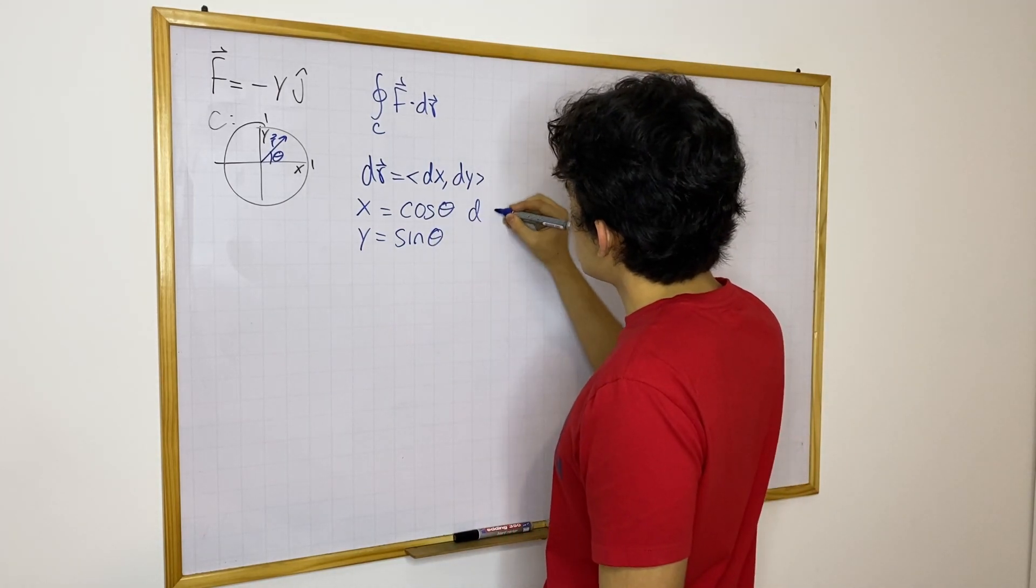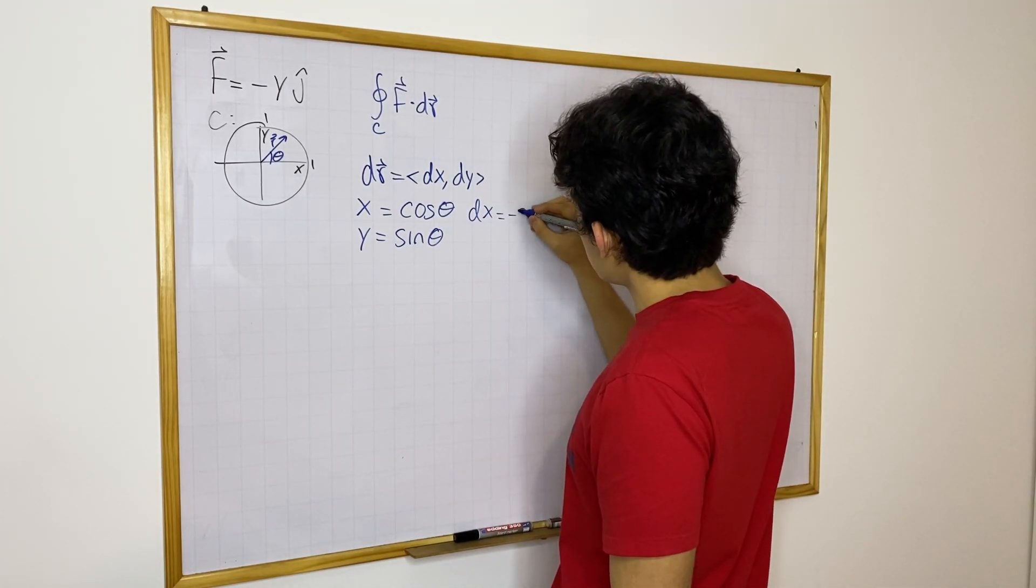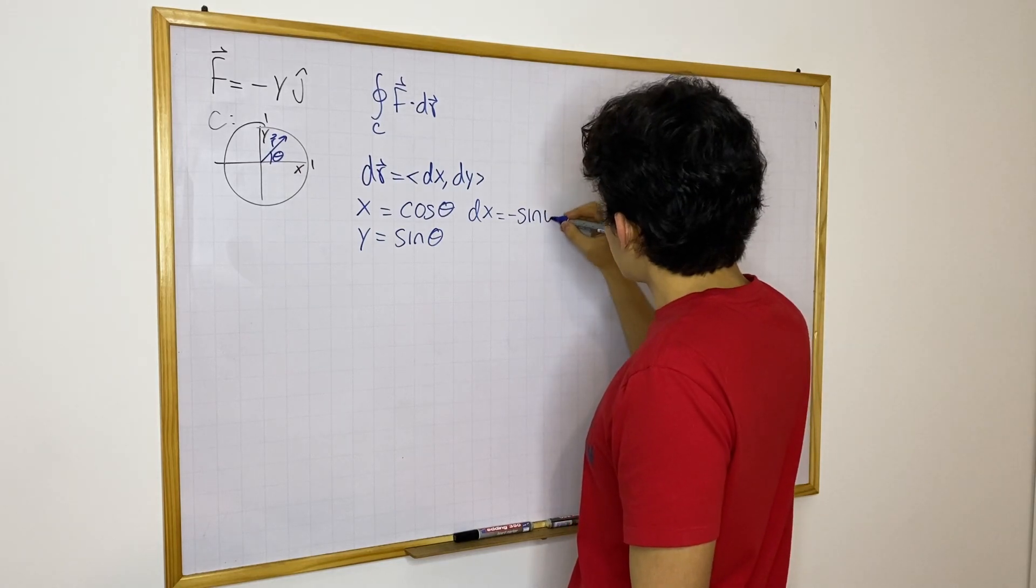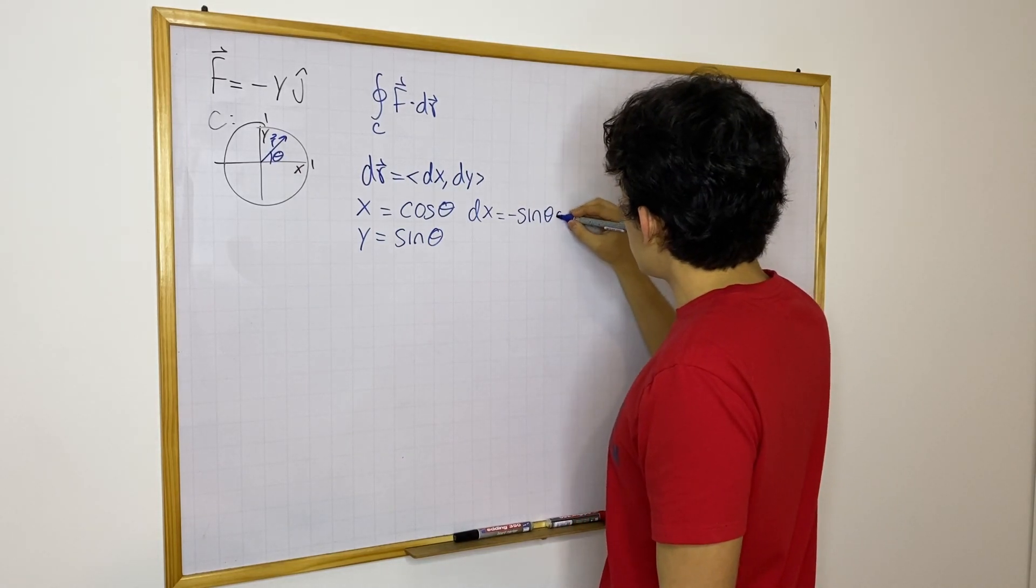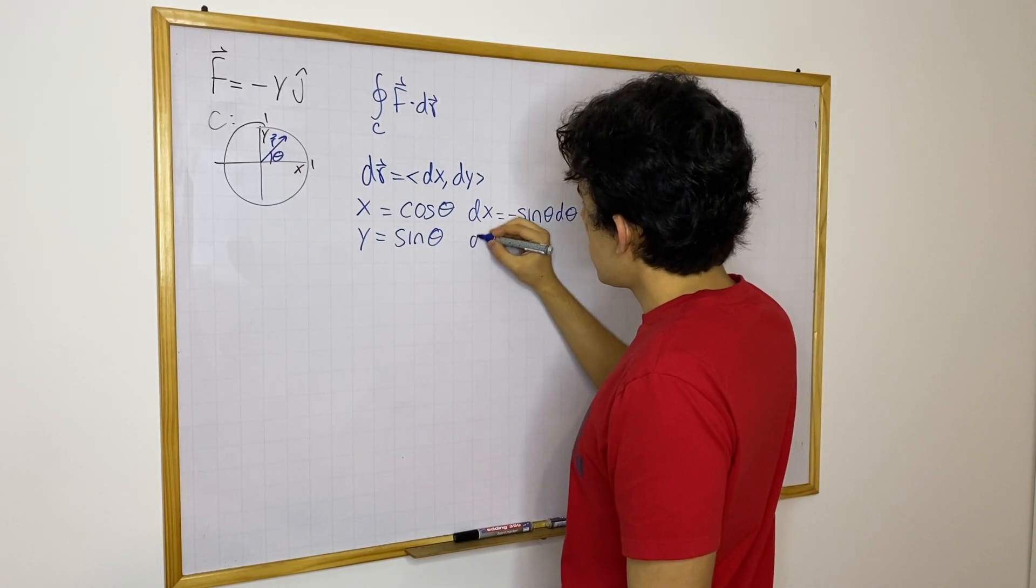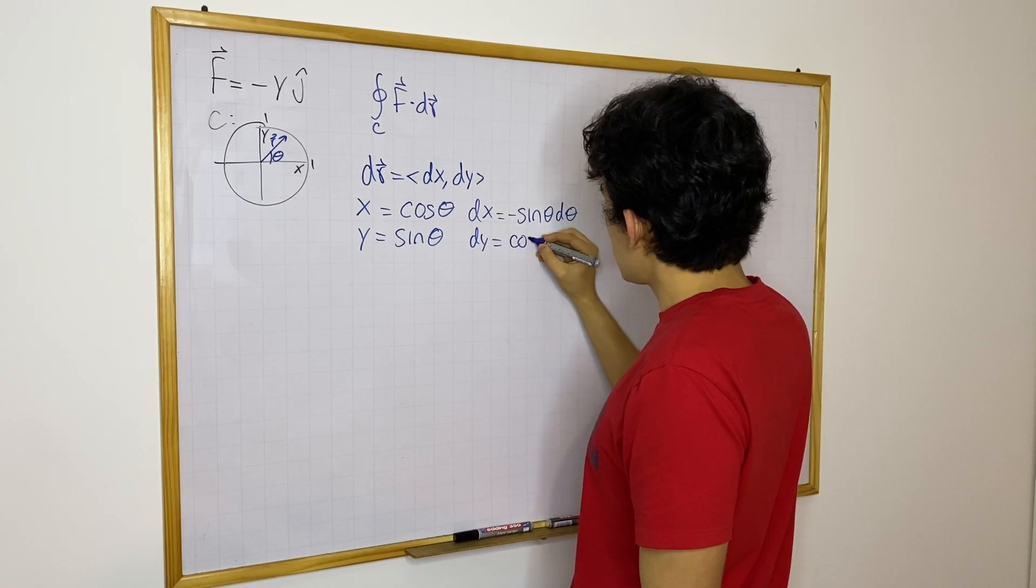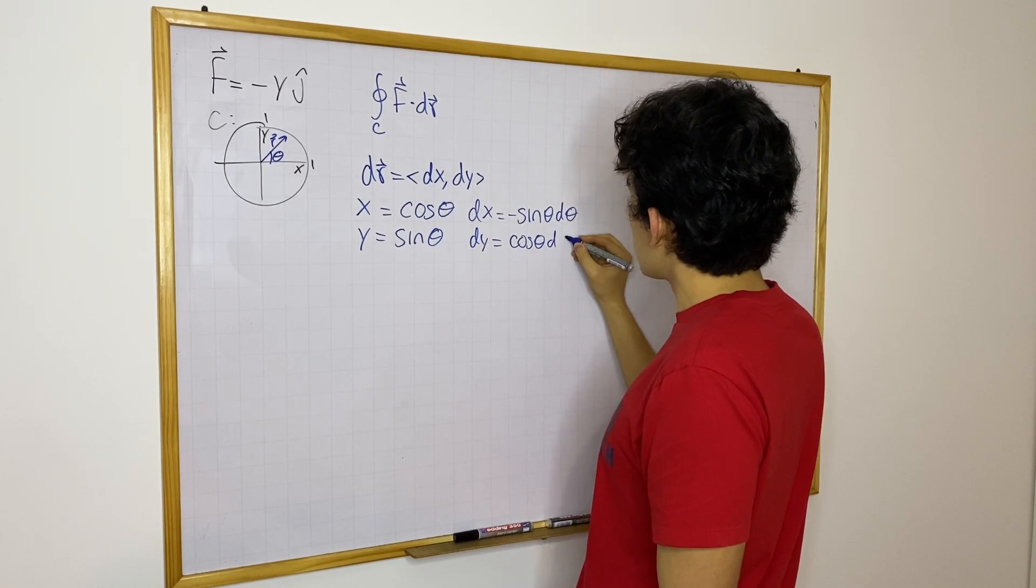And then it follows that dx is going to be equal to minus sine theta d theta and then dy is going to be equal to cosine theta d theta.